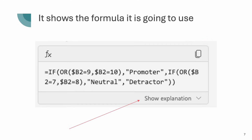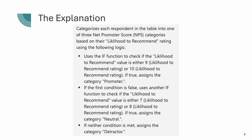It shows me the formula it's going to use. It brings up an IF with an OR, another IF with an OR, and then it's going to use the default else in order to get detractor. If I want to understand more about that formula, I can click in the Copilot panel to show the explanation. It tells me exactly what it's doing and how the IF statement works and why the detractor falls out if neither of the conditions is applicable.